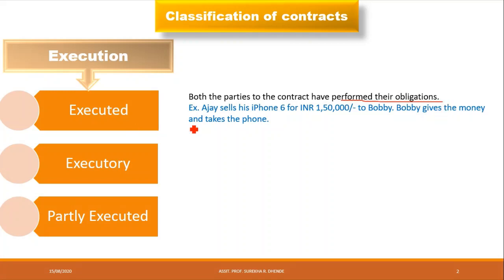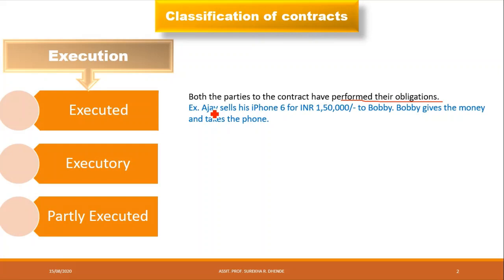For example, Ajay sells his iPhone 6 for one lakh fifty thousand to Bobby. Bobby pays the money and takes the phone. Ajay gets the money, Bobby gets the mobile — both parties' performance is complete. This is called an executed contract.